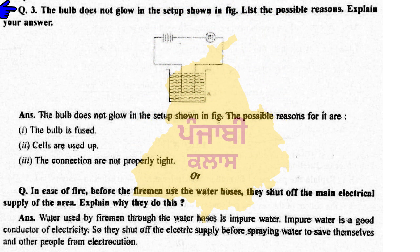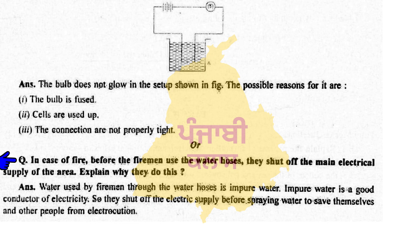The bulb does not glow in the setup shown in the figure — what is the possible reason? The possible reasons are: number one, the bulb is fused; number two, cells are used up; number three, the connections are not properly tight. Next question: Firemen use water hoses — they should shut off the main electrical supply of the area. Explain why. Water used by firemen through water hoses is impure water. Impure water is a good conductor of electricity. So they shut off the electricity supply before spraying water to save themselves and others from electrocution.